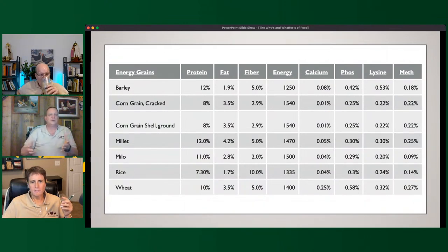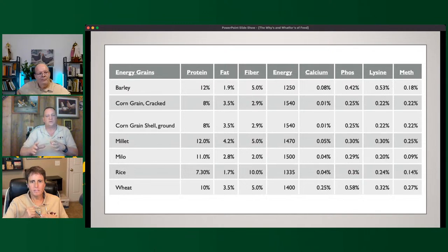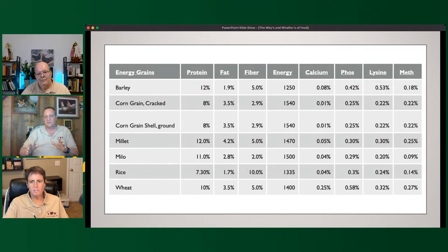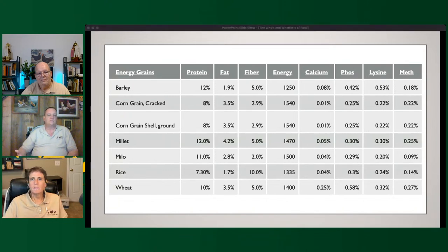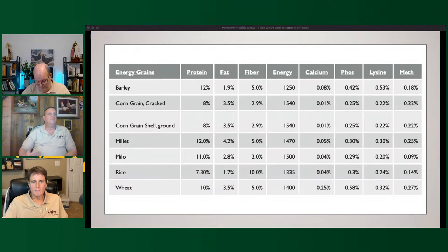All right, I put all the energy grains on one slide so you can easily see how they compare — I'm not putting all 60 nutrients I track, just the most critical ones. These are national averages. Barley, for instance, runs 10–12% protein, about 1.92% fat, 5% fiber typical. Energy is measured in kilocalories per pound — anyone who's gotten a ration from me will see that energy calculation. We have to add all of these up based on the pounds used.